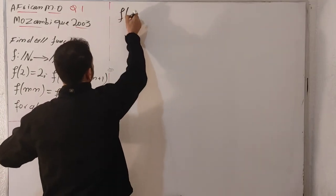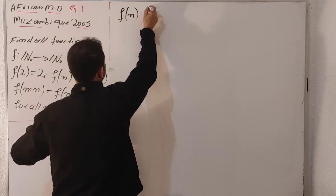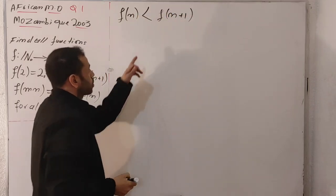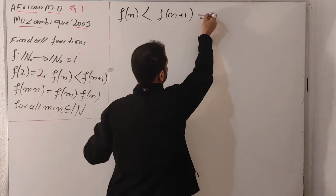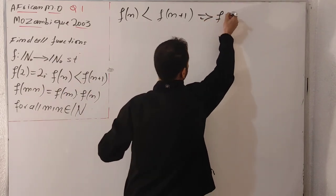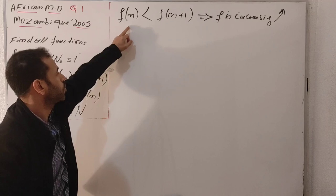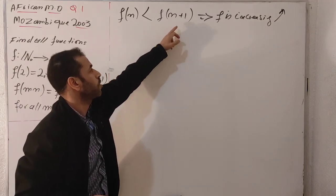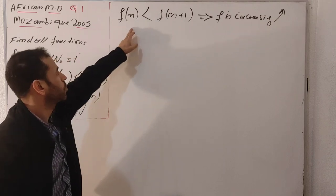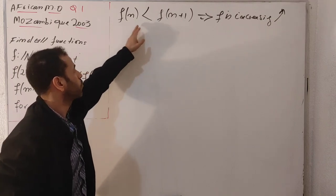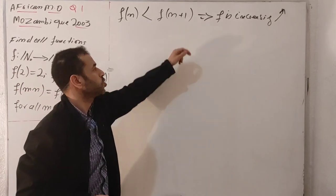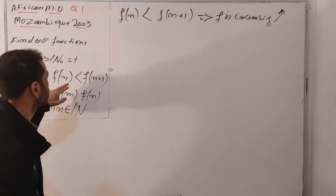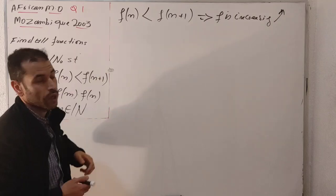The condition f(n) < f(n+1) tells us that f is a strictly increasing function. Taking n = 1 gives f(1) < f(2), taking n = 2 gives f(2) < f(3), f(3) < f(4), and so on. So this function is an increasing function.